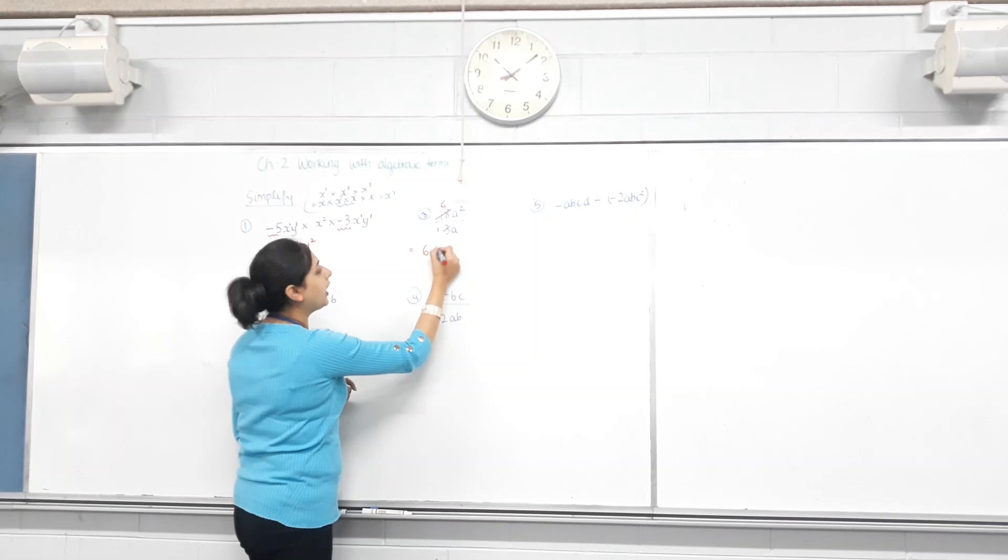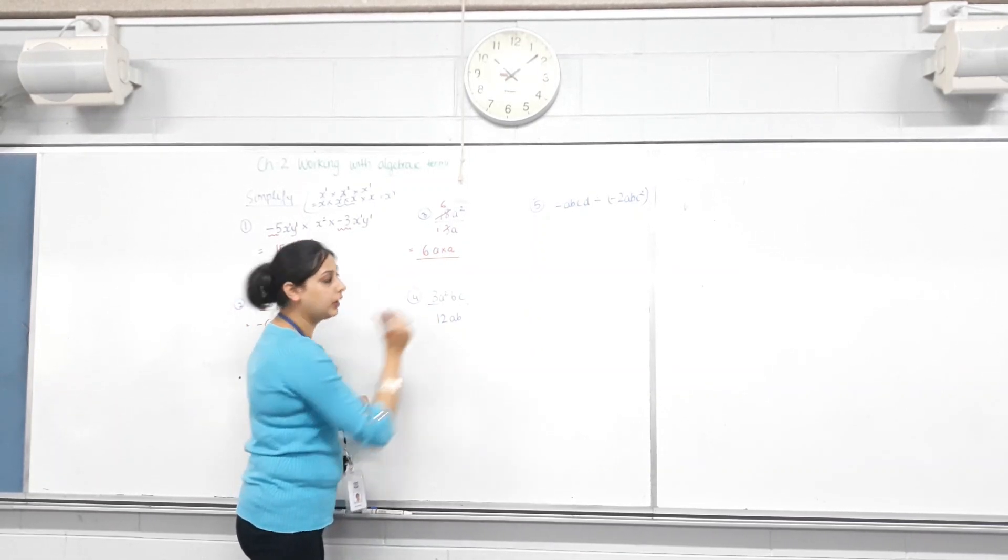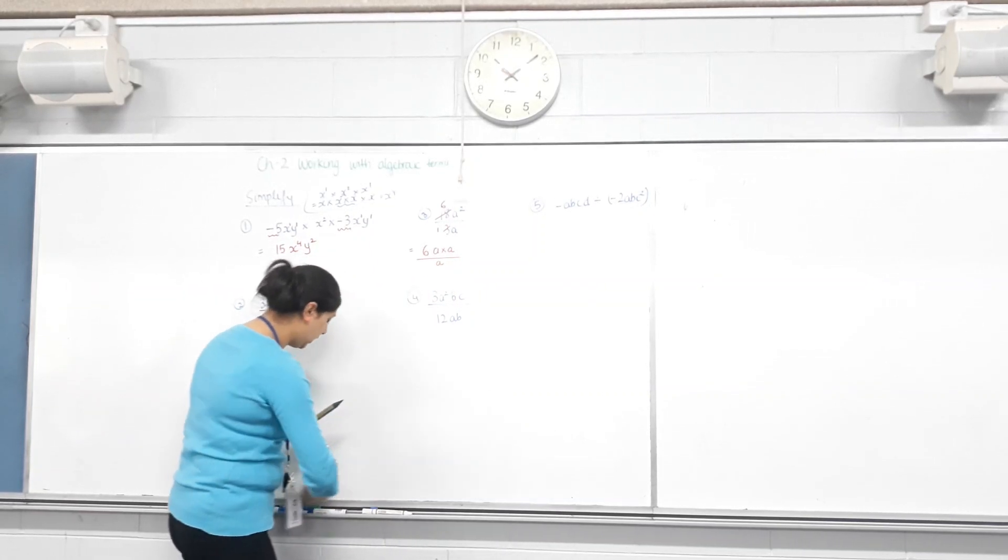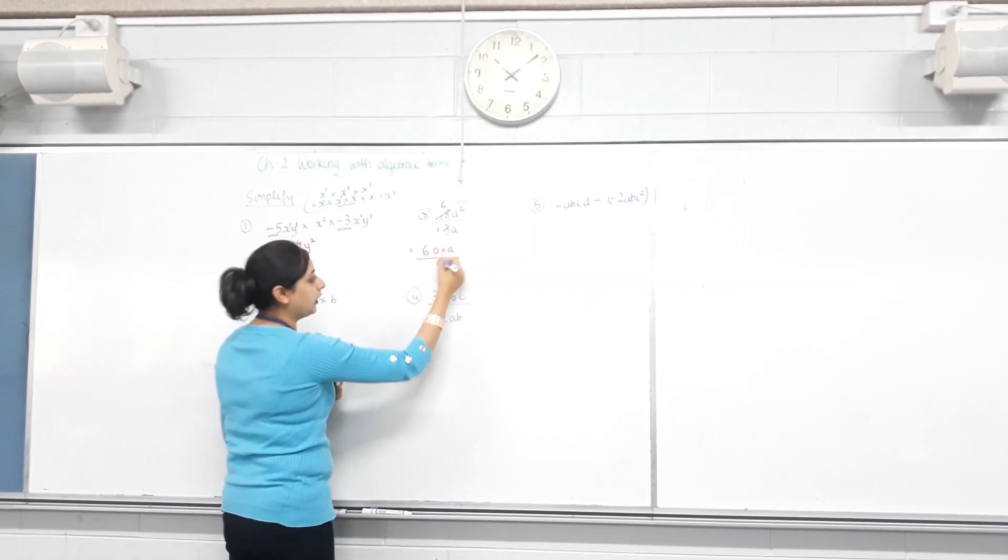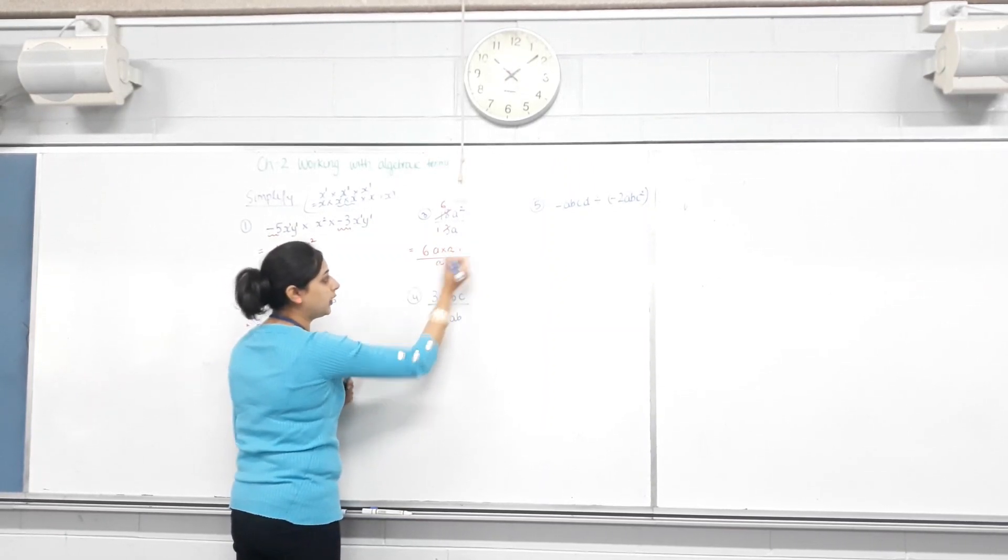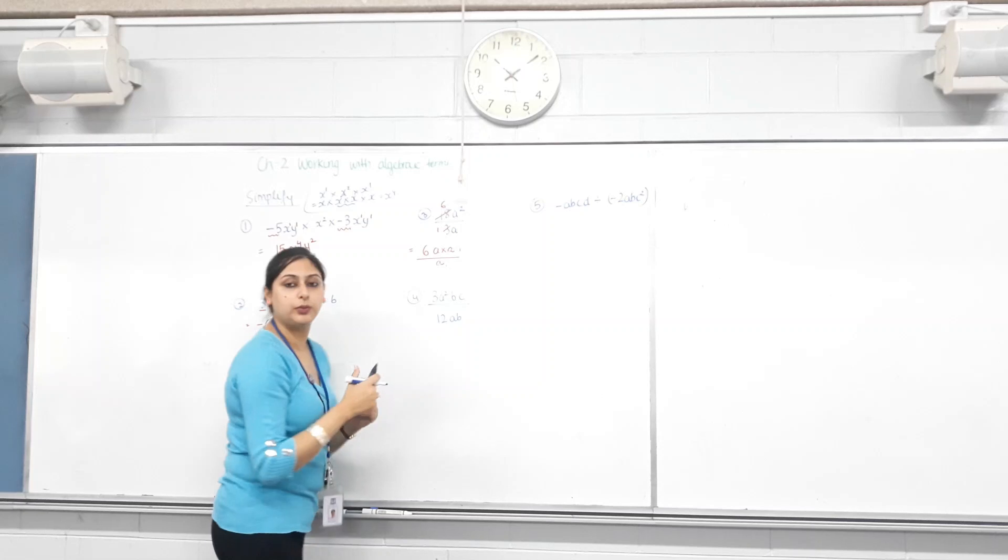Now, how many A's do we have on top? A squared. Can I write it as A times A? How many A's do I have at bottom? One. Now, can I divide both A and A by itself? So, A divided by A is one. You're only left with one A, right?